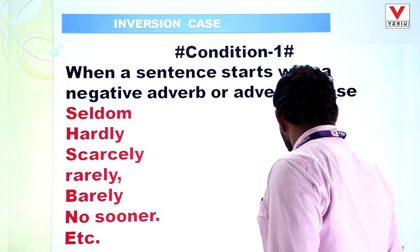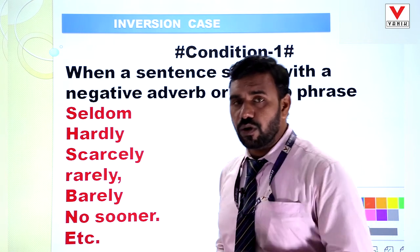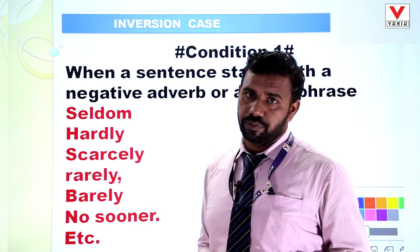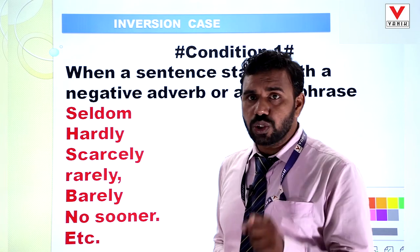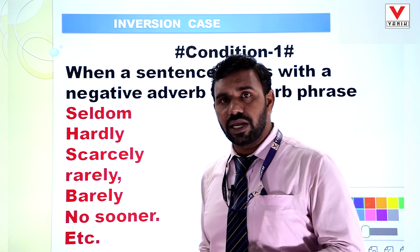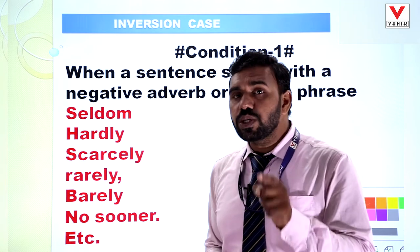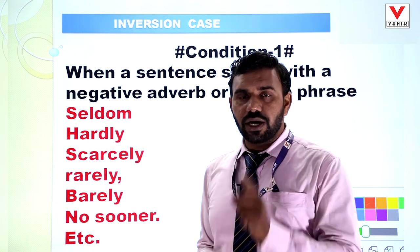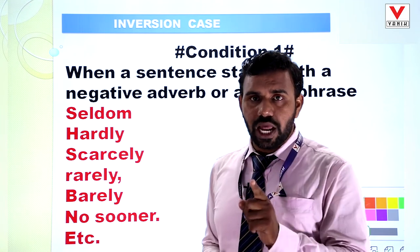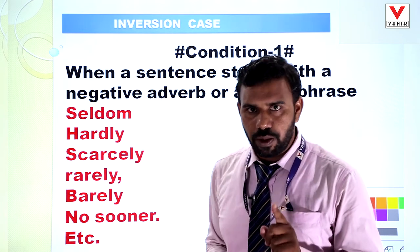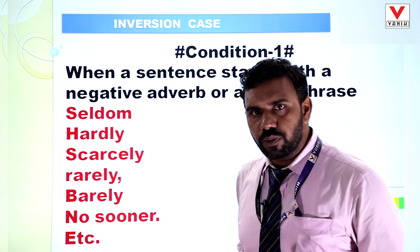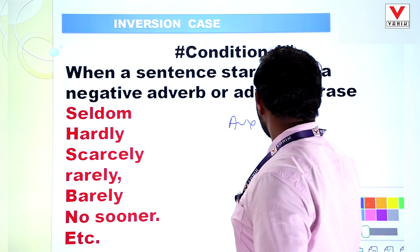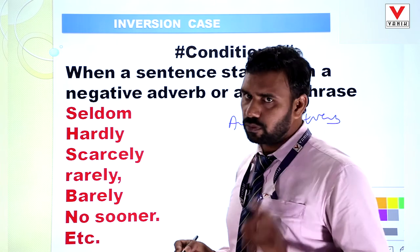You cannot say 'seldom he calls me' — this is wrong. You have to say 'seldom does he call me.' You do not say 'no sooner he saw his father than he started reading.' Rather say 'no sooner did he see his father than he started reading.' Why? Because in inversion, first we have to write the auxiliary, then the subject, then the verb.